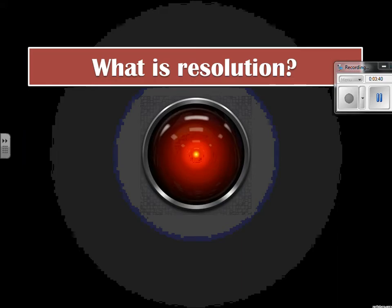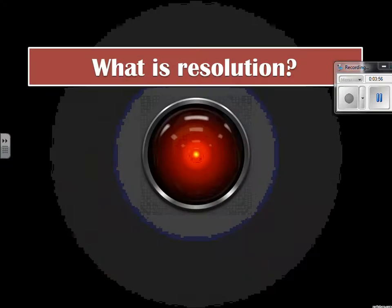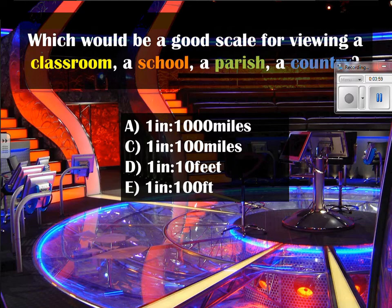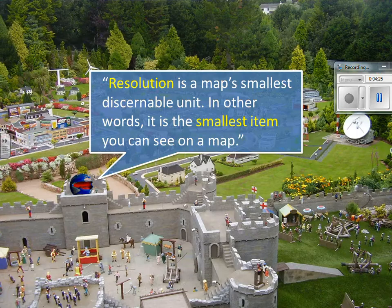Another issue within making maps is resolution — the smallest discernible unit you can put on the map based on the scale. If you have a scale for a country of one inch equals 1,000 miles, that's a large scale map, but there's going to be very little resolution; you won't have a lot of detail because it's showing so much distance. Whereas a map of the classroom at one inch equals 10 feet can show much more detail — that would be a high resolution map.